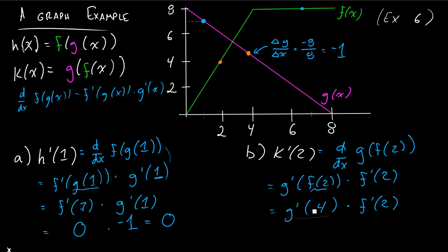So we already figured out what g prime of 4 was going to be, right? Because the slope over all of g is constant. And we know that g prime of 4 is going to be negative 1. Now for f prime of 2, we haven't figured out the slope here yet.